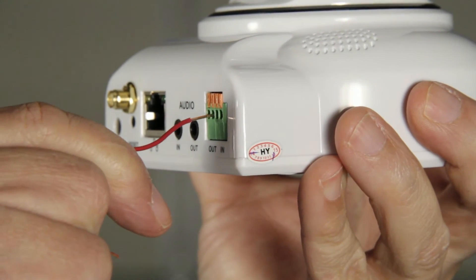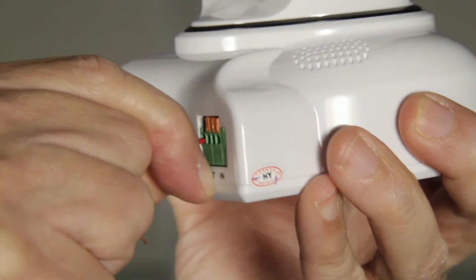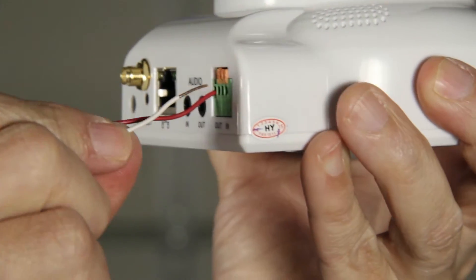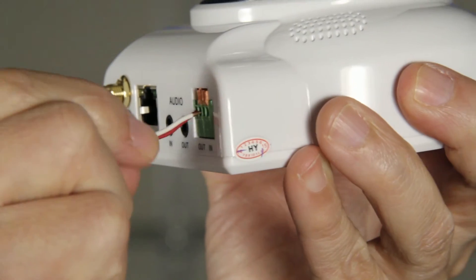Now insert one of the wires, it doesn't matter if it's red or white, into one of the holes until the orange lock is pushed in. And do the same for the other wire.